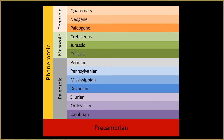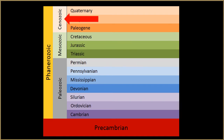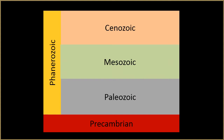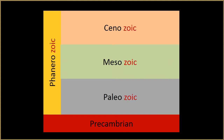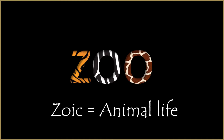Applying the principle of superposition, we know that the Pennsylvanian is older than the Jurassic system because it was laid down before. Anything in the Cenozoic erythem is younger than the Mississippian system because it was laid down after. This idea of relative age is reflected in these names. Notice that these names have the same suffix but different prefixes. The suffix "-zoic" is a little like the word "zoo" and means animal life — but here it refers to the fossilized remains of animals that used to be alive.